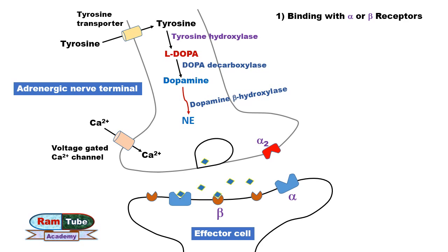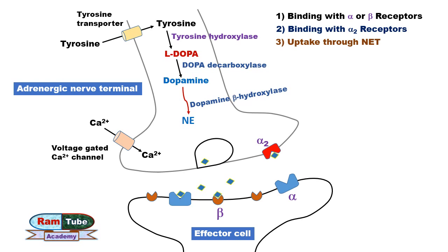Once released into the synapse, norepinephrine has different fates. First, it can bind with the alpha or beta receptors present on the post-synaptic effector organs and show its adrenergic effects. Second, it can bind with the pre-synaptic alpha-2 receptors, which are inhibitory, and hence activation of alpha-2 receptors causes a decrease in the release of norepinephrine.